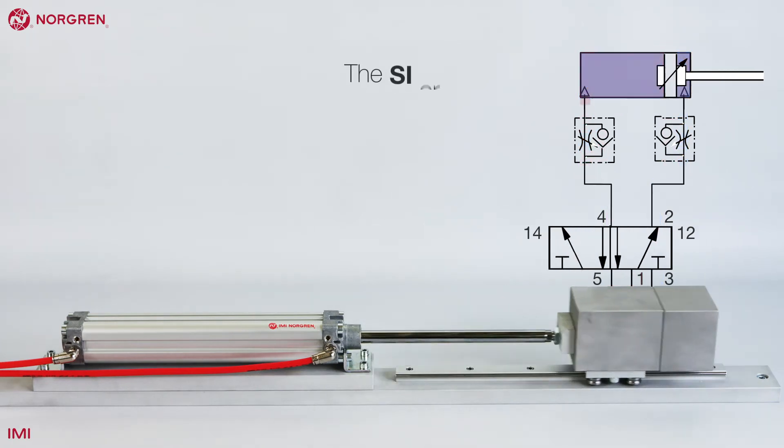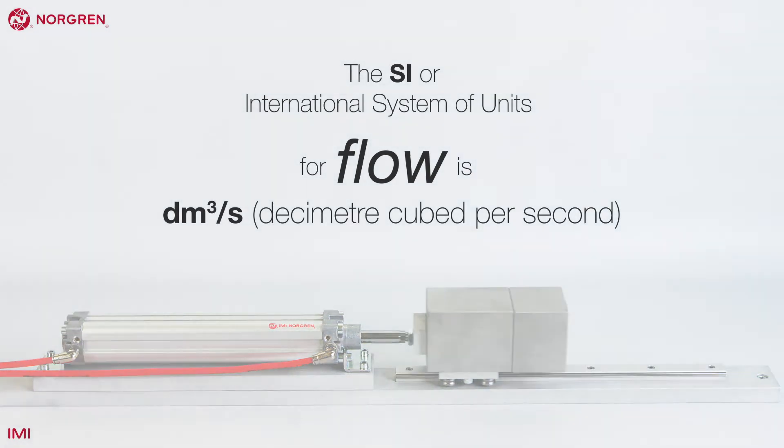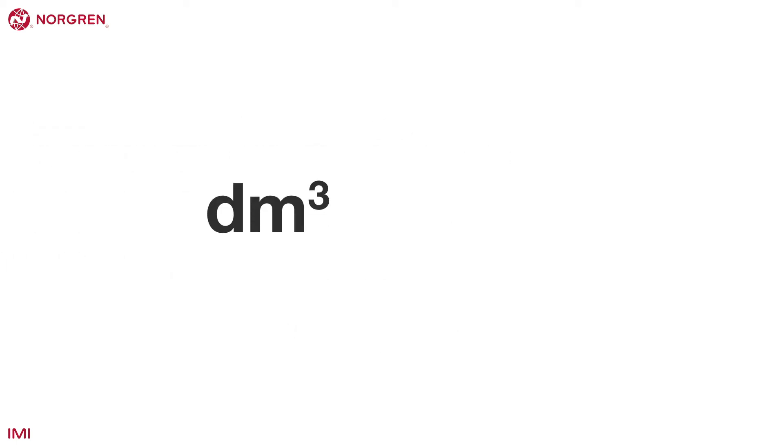The SI or international system of units for flow is decimetre cubed per second. However we often see other units, typically litres per minute. It's useful to know that a decimetre cubed is equal to a litre.